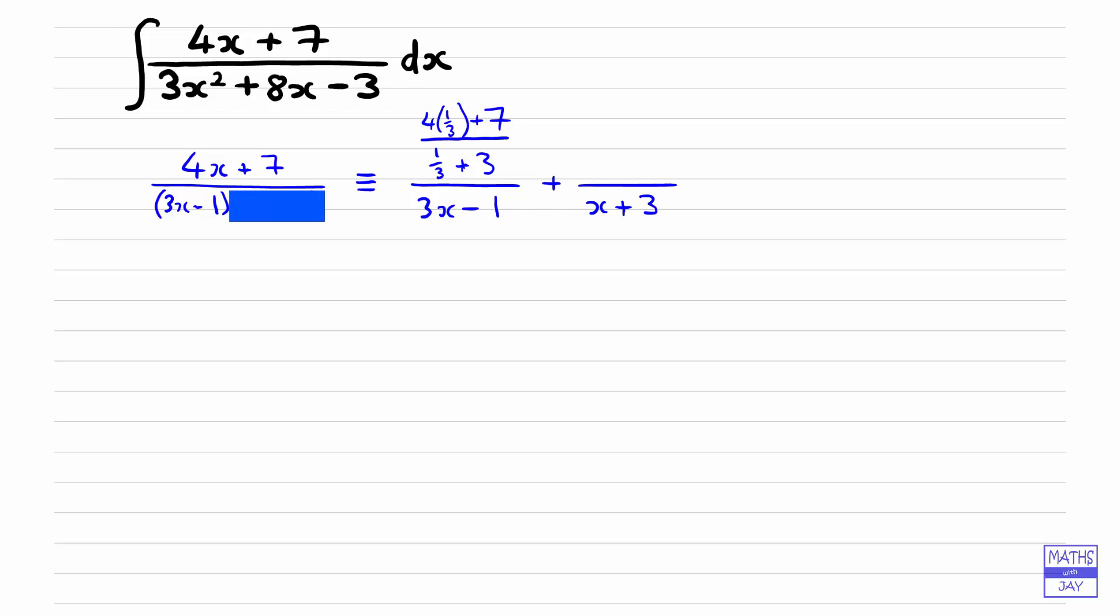And then covering up the x plus 3, that's going to give us 4x plus 7 over 3x minus 1, and putting in minus 3, the value that makes x plus 3 equal to 0, will give us 4 times minus 3, plus 7, and then in the denominator, we'll have 3 times minus 3 minus 1. So 3 times minus 3 minus 1, and we can simplify both of those.